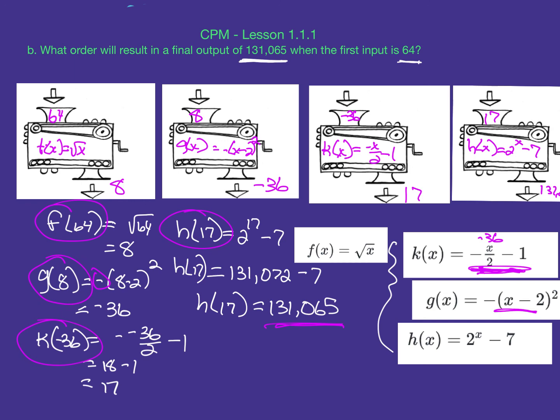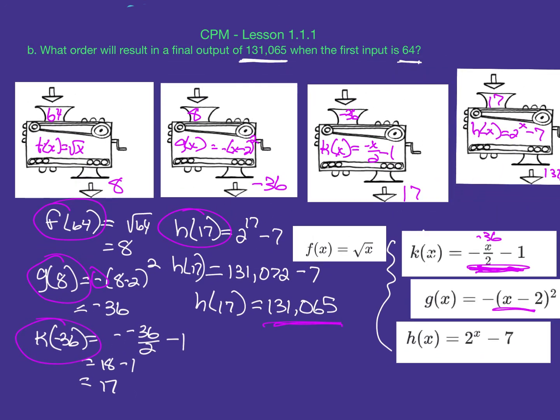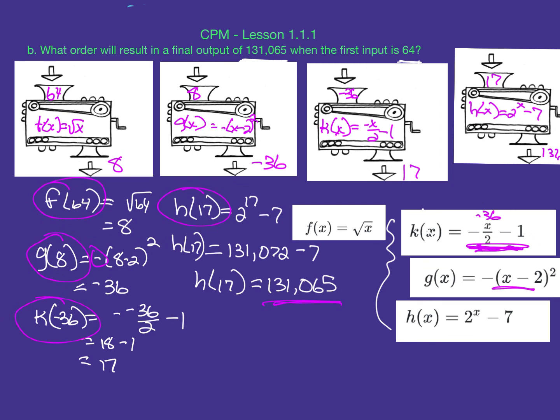Let's write this out as a composite function. We started with f(64), then it went into the G function, then into the K function, and the final function was H. Notice we're going from the inside out. The output was 131,065, which reads as H(K(G(F(64)))). Again, composite function—you don't know that terminology yet, but you will. That ends lesson 1.1.1.